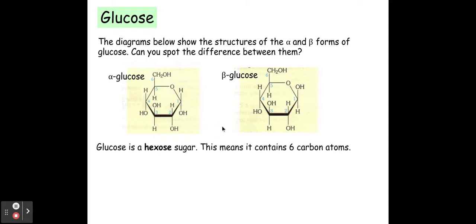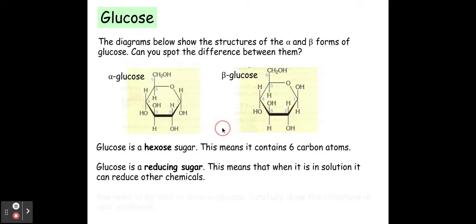So the main difference here is that they both got six carbons in them, however in beta glucose on carbon one, OH and H are the other way around. It's got a different orientation.